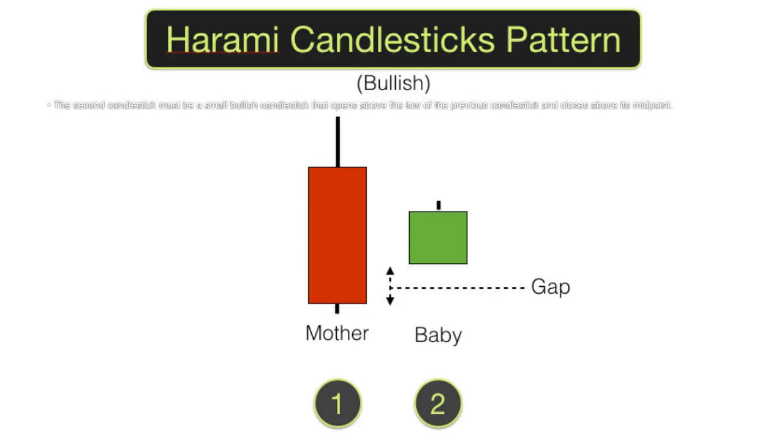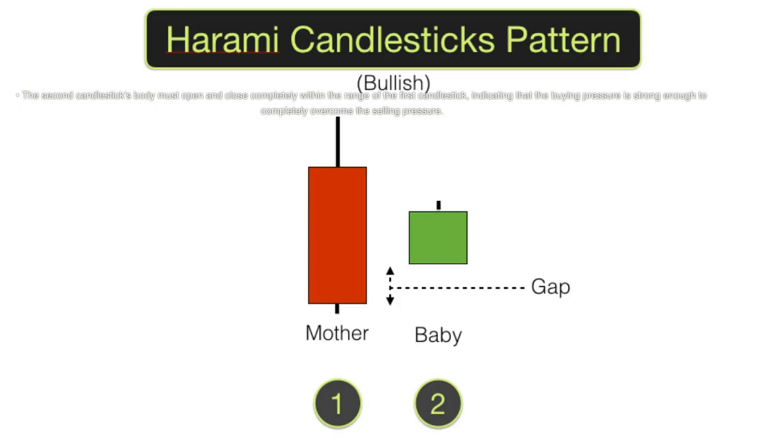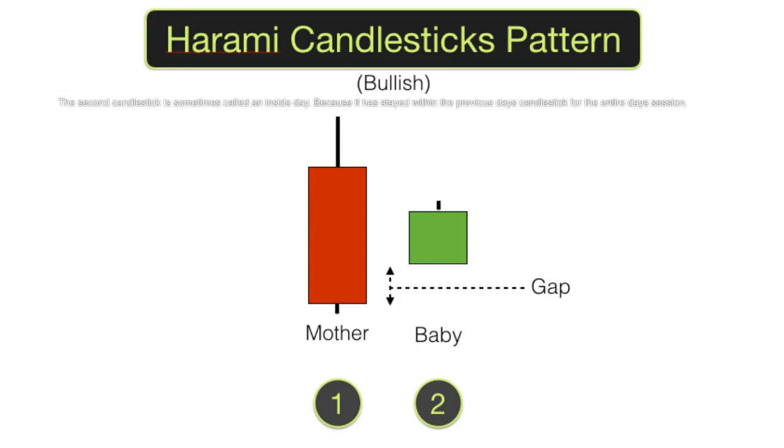The second candlestick must be a small bullish candlestick that opens above the low of the previous candlestick and closes above its midpoint. The second candlestick's body must open and close completely within the range of the first candlestick, indicating that the buying pressure is strong enough to completely overcome the selling pressure. The second candlestick is sometimes called an inside day because it has stayed within the previous day's candlestick for the entire day's session.